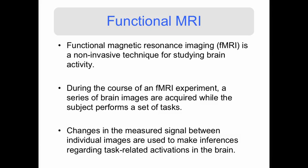Changes in the measured signal between individual images are then used to make inferences regarding task-related activations in the brain. For example, let's consider a simple task where I do finger tapping for 20 seconds and resting for 20 seconds.